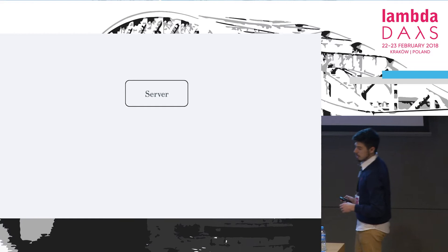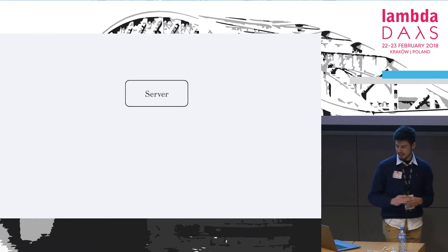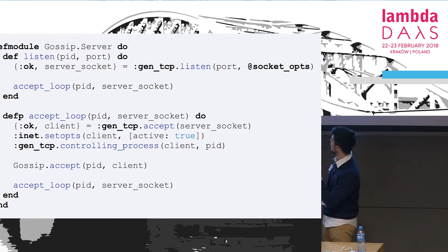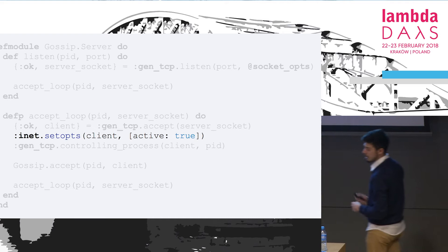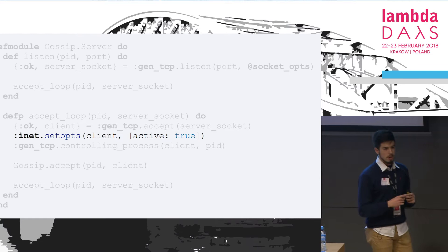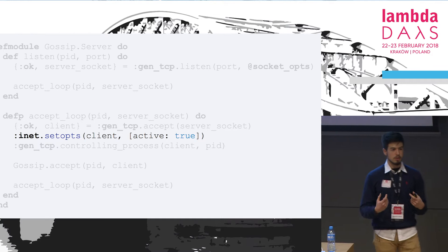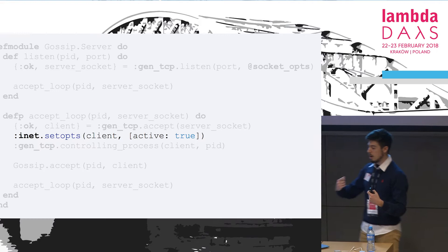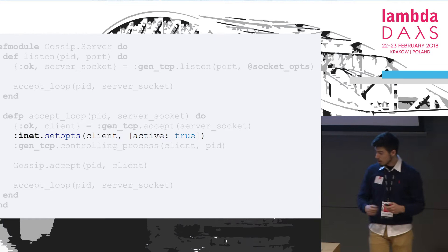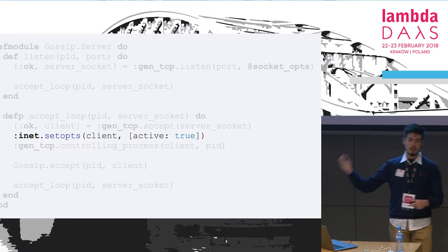First, to build our distributed system we need to receive new connections — you set up a server. Now I'm going to show you some Elixir code. There's a little trick I discovered with GenTCP in the inet options. Normally you need two threads or two processes to communicate both ways — one blocked on the socket listening for incoming data, another for sending outgoing data. But this option basically tells the system: listen to this port and send me an Erlang message whenever data comes in.